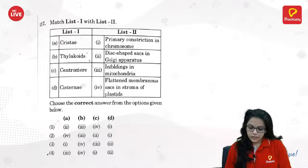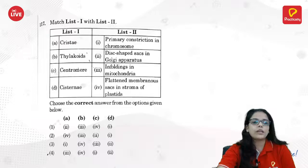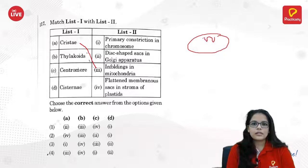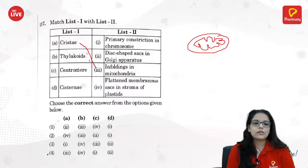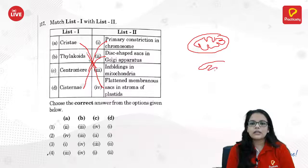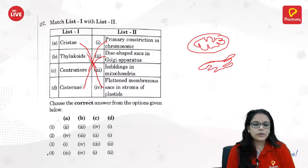In the match-the-following about cell organelles: cristae are the infoldings of mitochondria. Thylakoids are the flattened membranous sacs in chloroplasts. Centromere is a part of the chromosome — primary constriction. Cisternae are disc-shaped sacs in the Golgi apparatus. The answer is A3 only, which has this option.